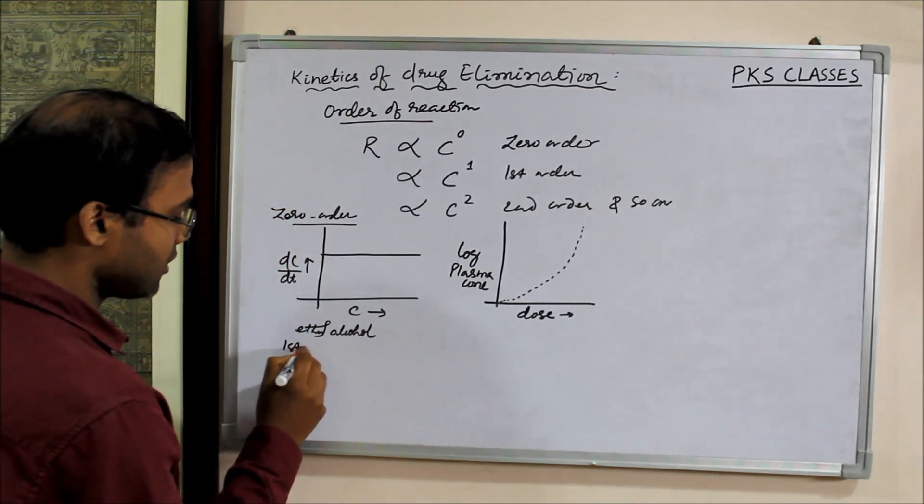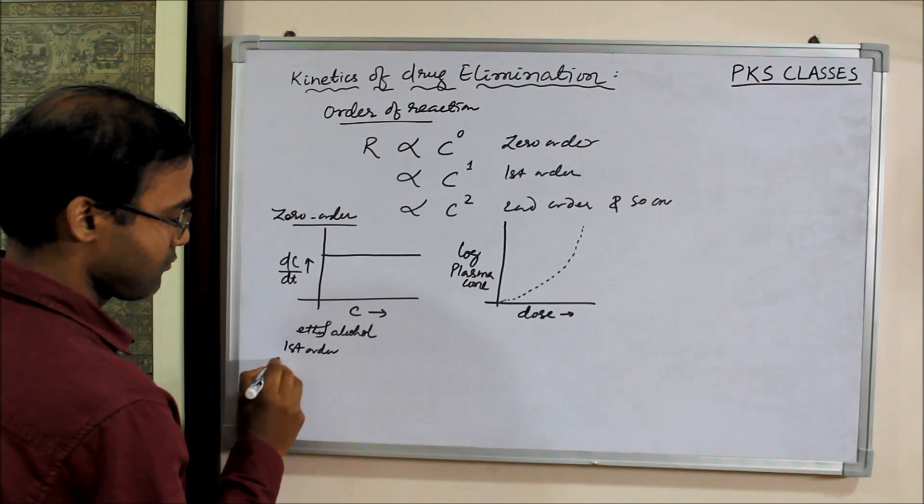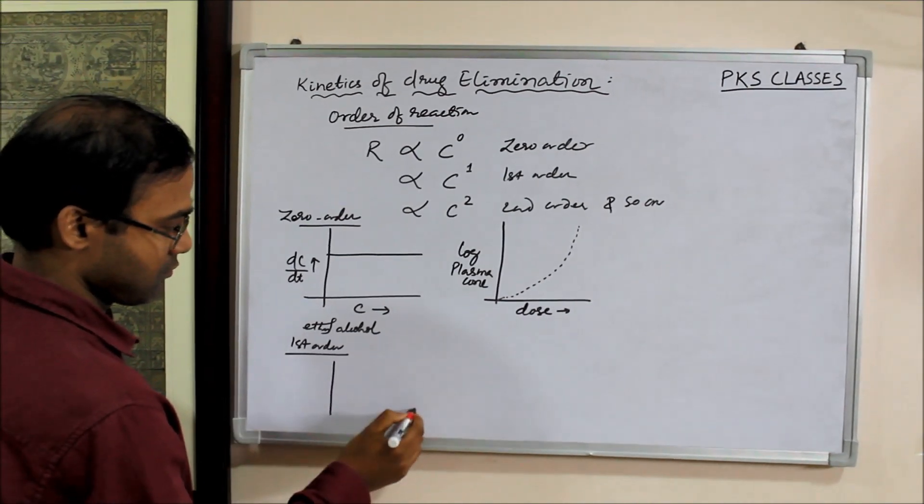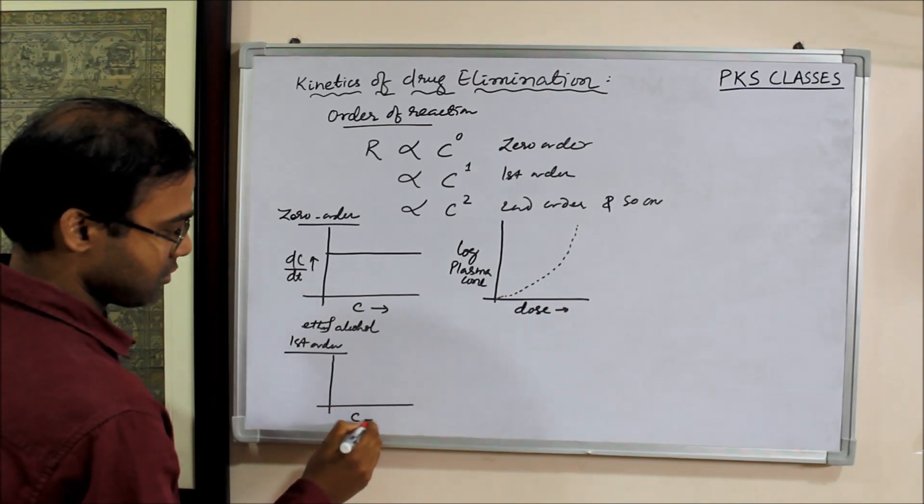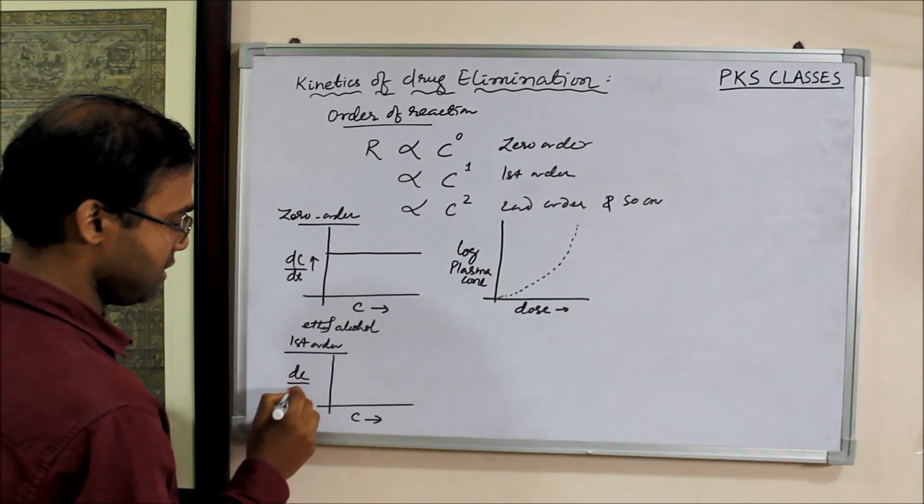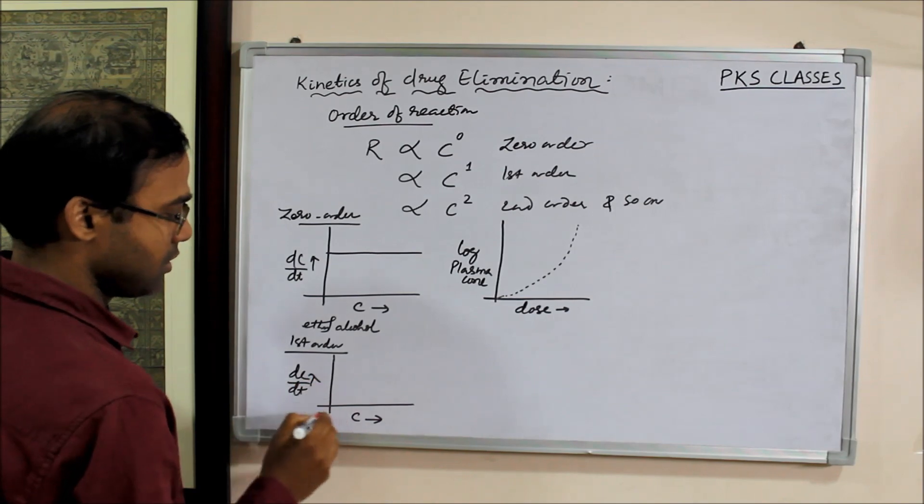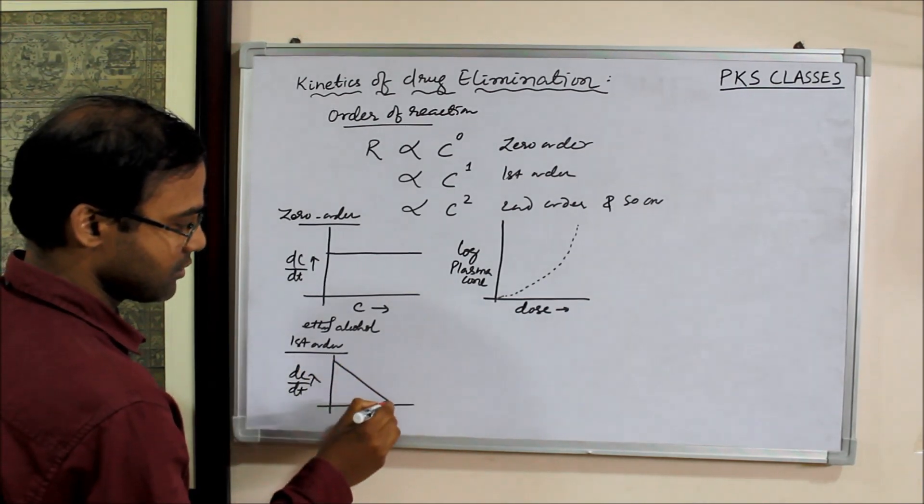In case of first order, if we plot a graph between concentration versus DC by DT, then it will be like this.